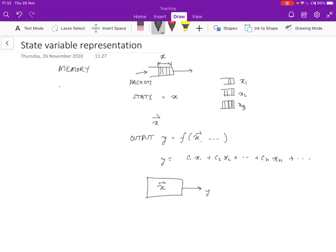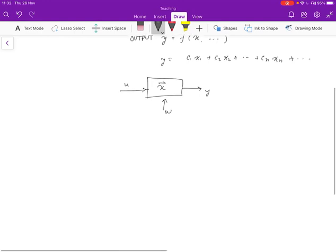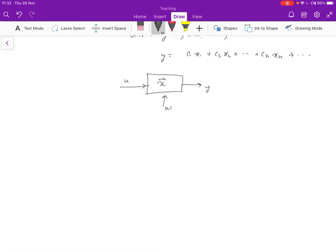Of course, Y can also be a vector, but for right now, let's assume it's a scalar. And it has some input U, and it will have some disturbance W. So the output Y is going to depend on the disturbances as well, and the input as well.